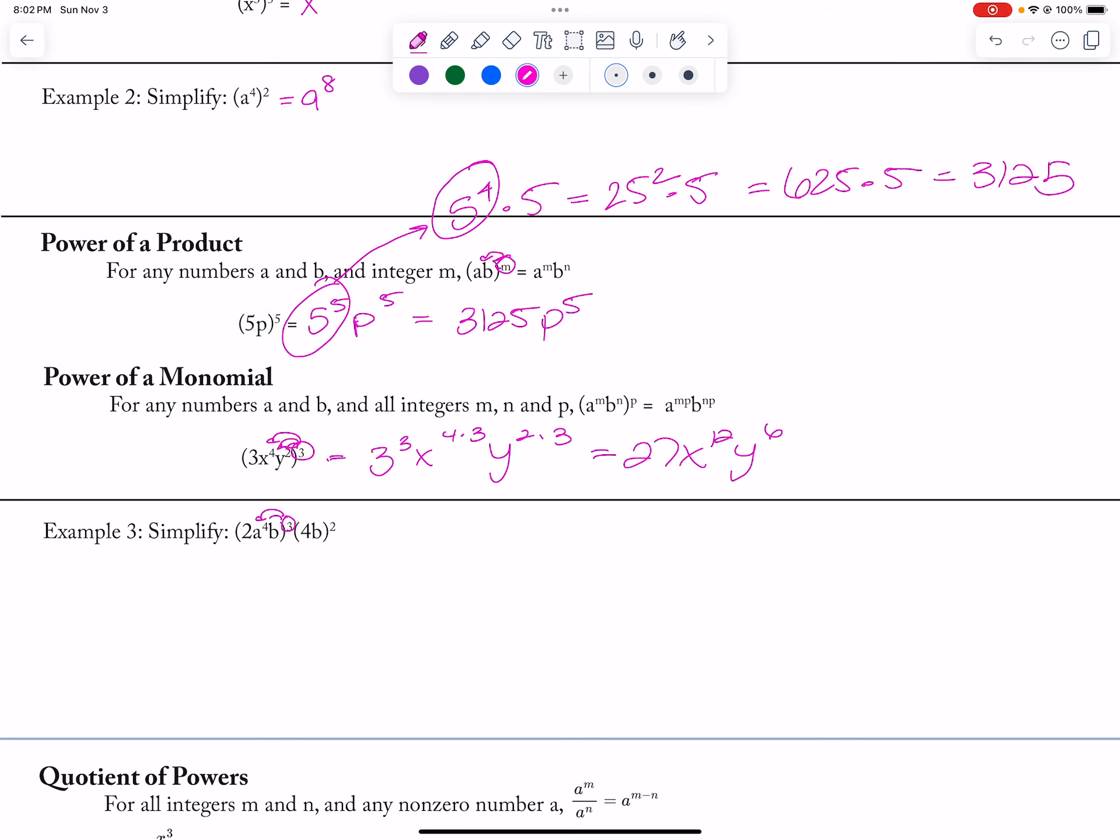I will distribute my exponents first. So I get 2 to the 3rd, a to the 12th, b to the 3rd, 4 to the 2nd, b to the 2nd. This gives me 8 times 16, which is 128, so 128 a to the 12th and b to the 5th, because I add these exponents together.